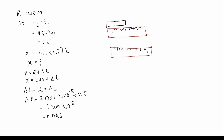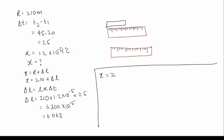So the change in length delta L is 0.063. Substituting the value of delta L into the equation, x is equal to 210 plus 0.063, which equals 210.063 meters. So this is the real reading of the object.